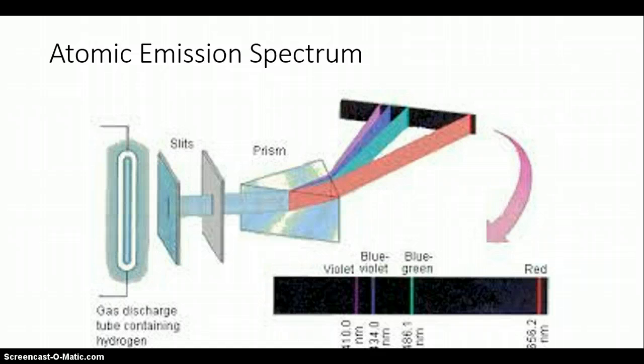This right here is called the atomic emission spectrum. On the left side is a gas discharge tube. In this gas discharge tube is one single element, hydrogen. When you put a current through it, the hydrogen will give off some light. That light is then passed through a couple of slits and through a prism which breaks up the individual components of the light coming from hydrogen.